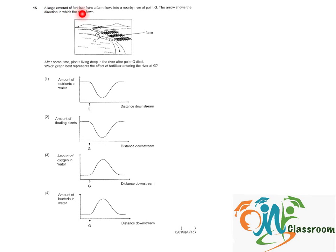A large amount of fertilizer from a farm flows into a nearby river at point G. The arrow shows the direction in which the river flows. So after some time, plants living deep in the river after point G died. Which graph best represents the effect of fertilizer entering the river at G?